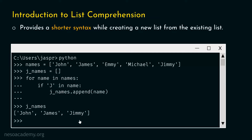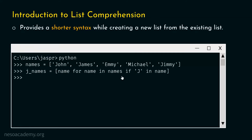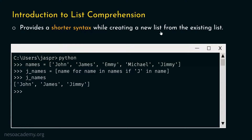We are getting the same result we wanted. It is clear how to work with an existing list to create a new list based on a condition. Now let's see how list comprehension reduces these lines of code to just one line. With list comprehension, we write: j_names = [name for name in names if 'J' in name]. Typing j_names gives us John, James, and Jimmy — the same list. This is the power of list comprehension.